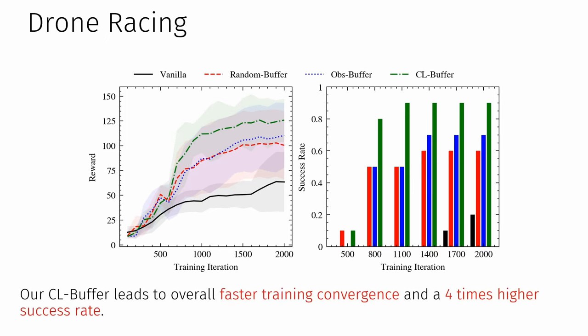Furthermore, compared to other strategies to select initial states, our proposed CL buffer leads to faster training performance in terms of success rates while also achieving a higher reward.